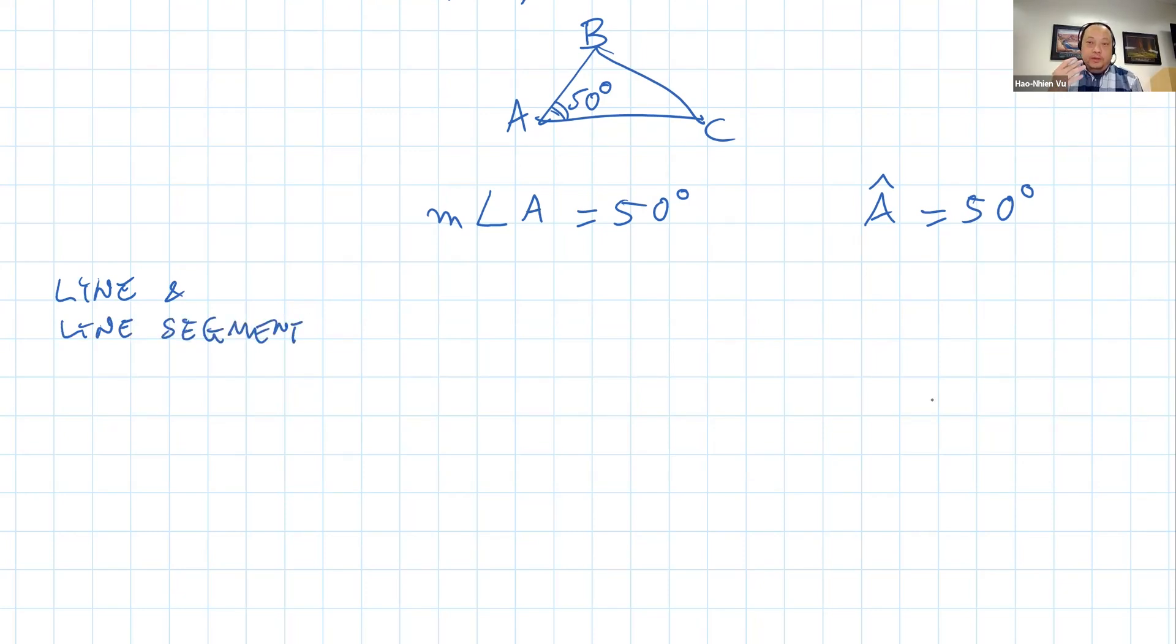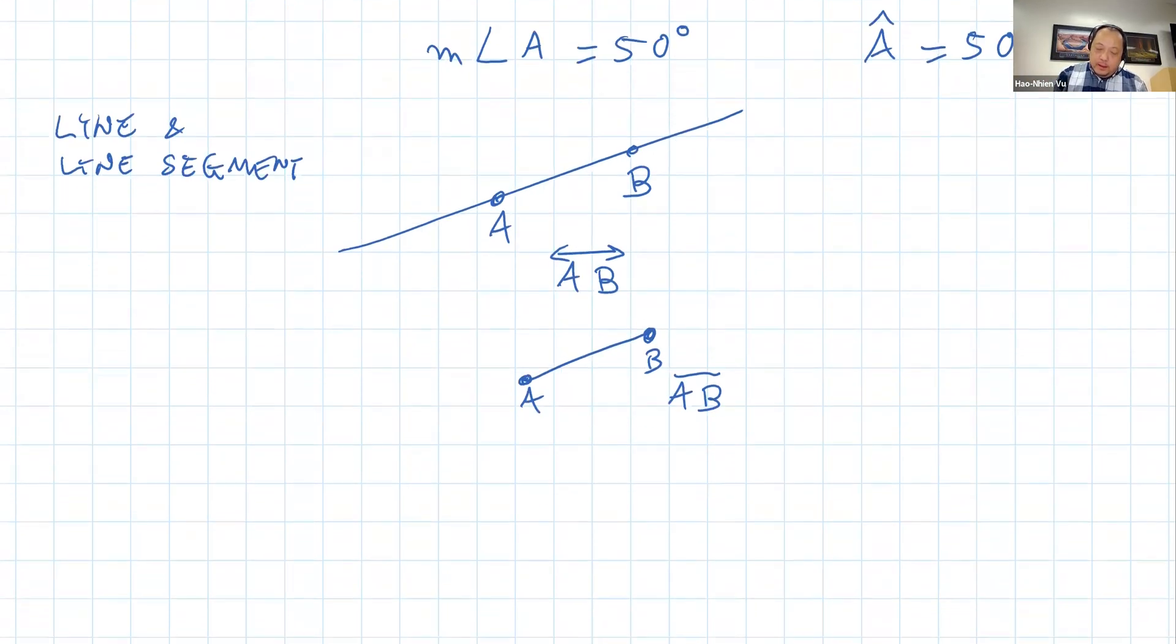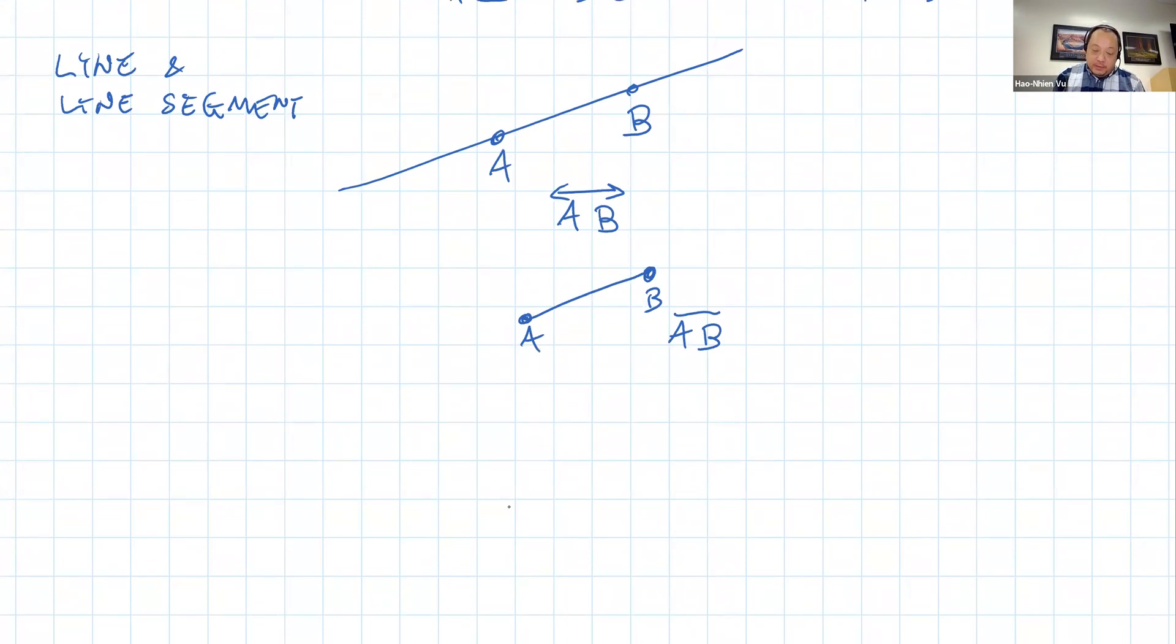In the US we make a lot of distinctions between different ways of describing a line. So for example, if we have two points AB and we have a line through it, we'd be writing AB with two-way arrows like that. If we refer to just the segment AB, we'd be writing it as AB with a line that does not extend, no arrows. And if you have a half line like a ray that starts at A and goes in the direction of B and extends infinitely in the direction of B, then we'd be writing as AB with an arrow like that.